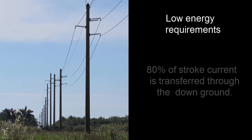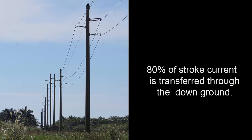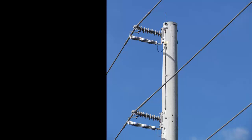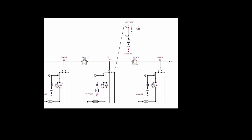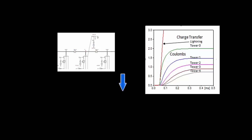This is because 80% of the stroke current is routed to ground via the downground. However, if the arrestors are used on unshielded lines, such as we see in this photo of a 69 kV line in Lakeland, Florida, higher energy may be needed. Theoretically, if there is a 16 coulomb discharge into an unshielded transmission line that has arrestors on each tower, the current and charge is shared very well. In simulations, we find that even with a 16 coulomb stroke, only two coulombs is transferred by the nearest arrestor.